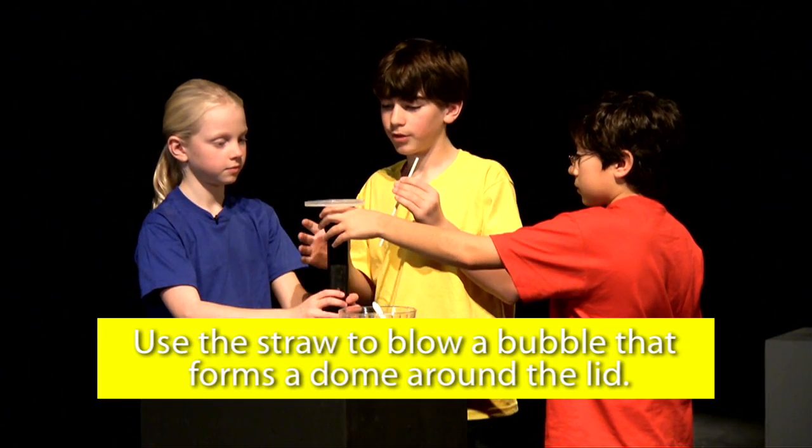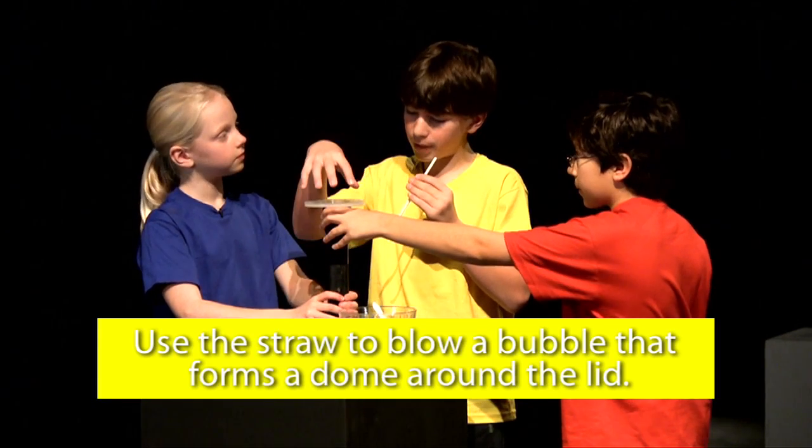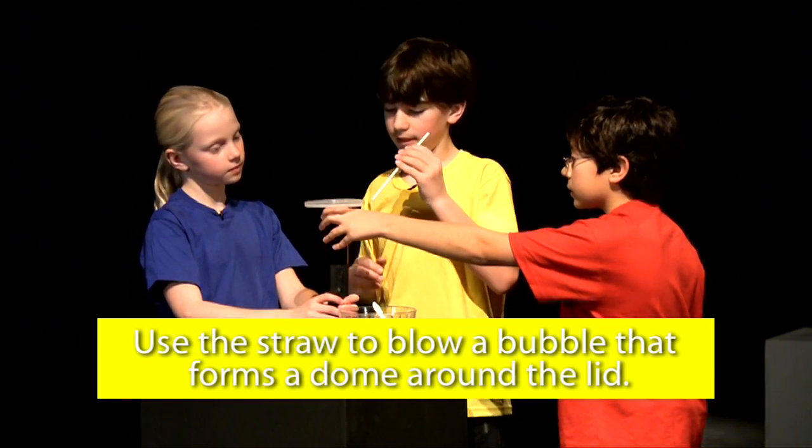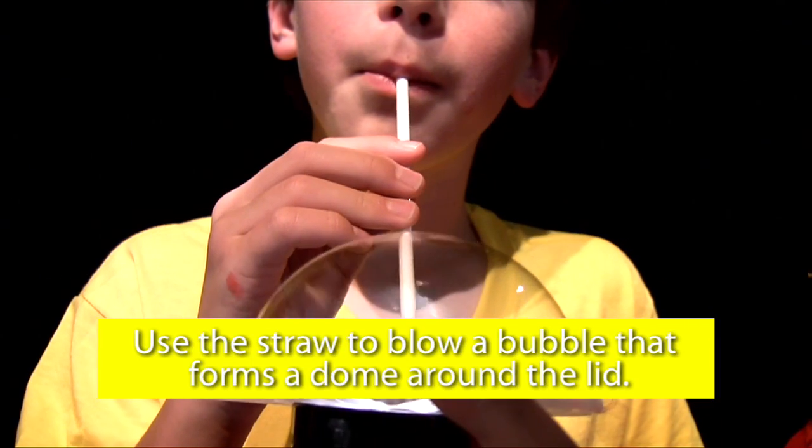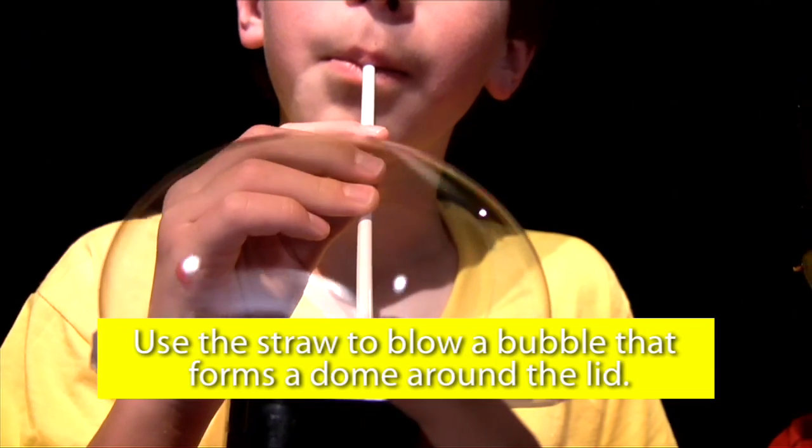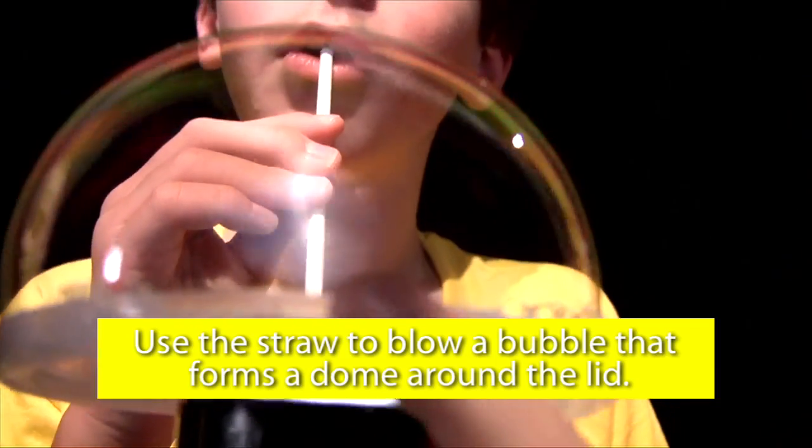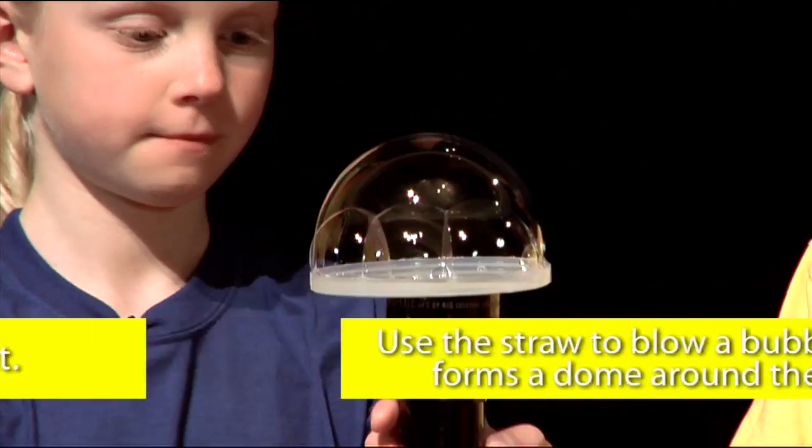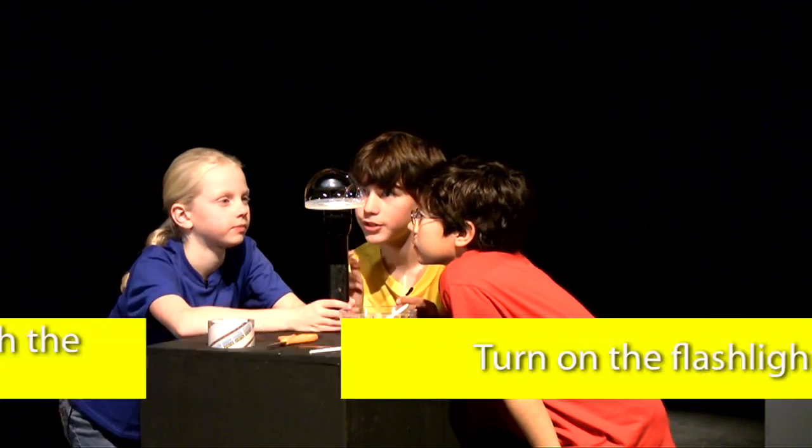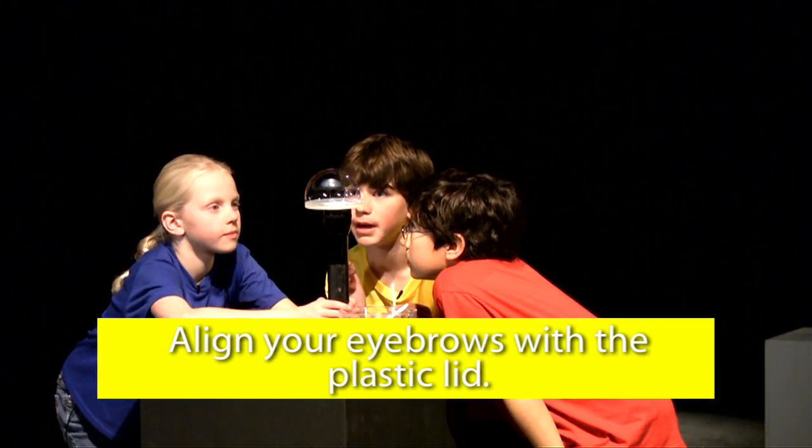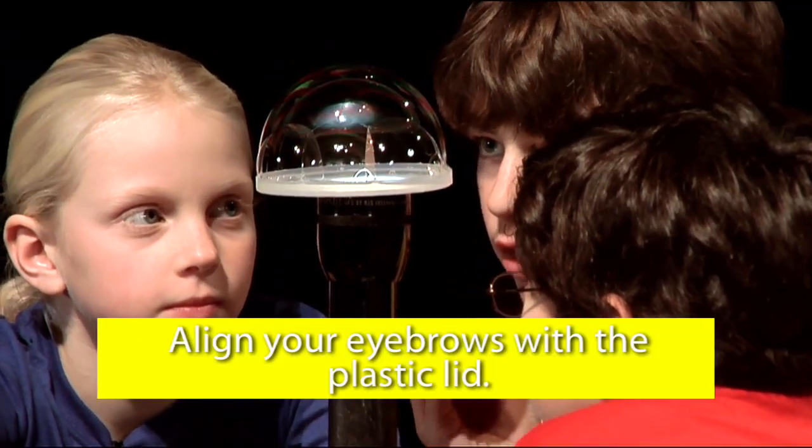Then, blow a bubble to form a dome above the plastic lid. Then, turn the flashlight on. Make the plastic lid aligned with your eyebrows and look up into the bubble and you'll be able to see colors.